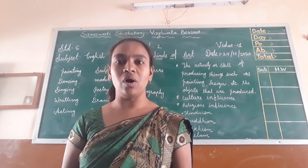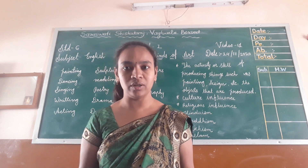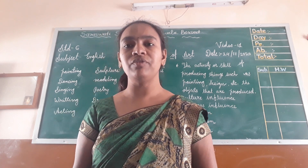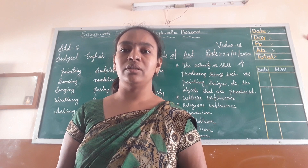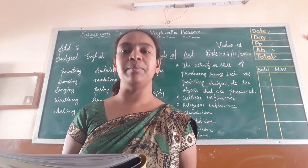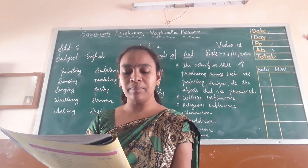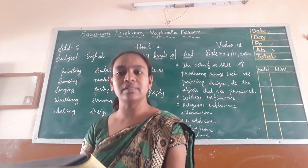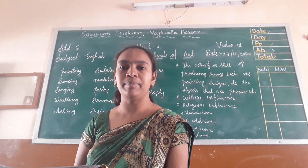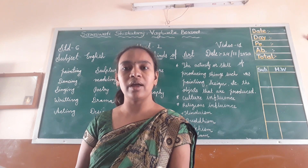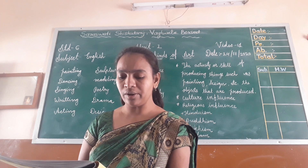Vincent van Gogh belongs to the Netherlands. What is the time period of Vincent van Gogh? The time period is 1853 to 1890. What is ahead is that he painted more than 900 paintings in his lifetime. During his life, he only sold one painting.